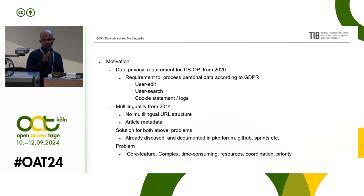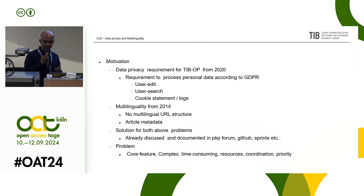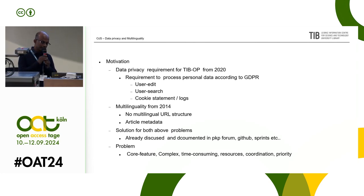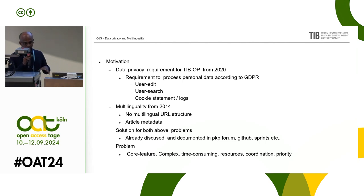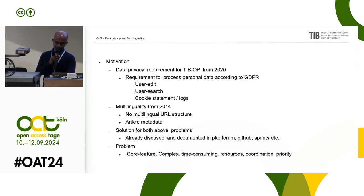Solutions have been discussed for a long time. They are documented in the PKP Forum, GitHub, and various sprints. We know what the real requirement is and we know what the solution is, but it has not been implemented. The problem is that it is complex and it is a core feature. To develop these features in OJS or OMP context is very time consuming — you need the resources, and this kind of development must be coordinated well with the community because it is a big change. And last but not least, the priority is the most determining factor.